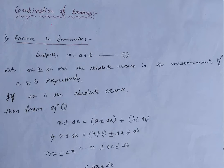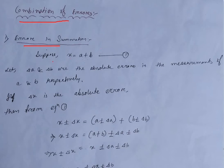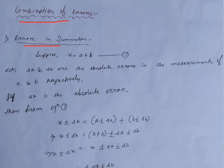Hello students. In this lecture we are going to learn the combination of errors. The first one is error in summation. Suppose x is equal to a plus b. When we have to measure x, we have to measure a and b individually. When we are measuring a and b individually, we are going to get some errors. So if del a and del b are absolute errors in the measurement of a and b respectively,